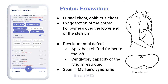Pectus excavatum, also called funnel chest or cobbler's chest, is the exaggeration of the normal hollowness over the lower end of the sternum. It is a developmental defect. The apex beat shifts further to the left and the ventilatory capacity of the lung is restricted. It is seen in Marfan syndrome.